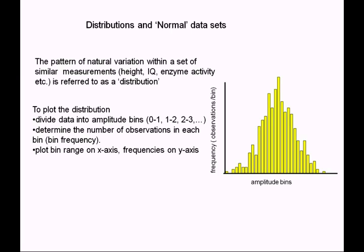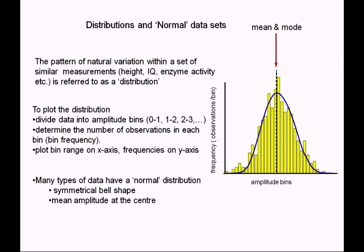A lot of biological data form this kind of distribution — it's called a normal distribution. It's basically bell-shaped, with the mean value sitting right in the middle of the bell, and so does the modal value, so it's symmetrical.